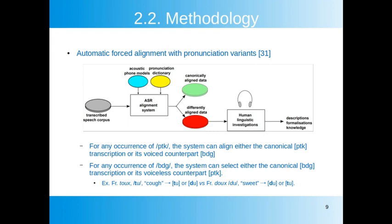All five speech recognition systems — one per language — are comparable in terms of architecture and were previously trained on similar data. Voicing or devoicing is decided based on whether the best matching phone model corresponds to the original voiceless or voiced canonical form, or to the voiced or devoiced variant — much like an automated ABX judgment task. The system compares the acoustic realization of each consonant with the corresponding voiceless or voiced phone model and selects the best one. For any occurrence of a voiceless stop, the system can align either the canonical voiceless transcription or its voiced counterpart, and conversely for any voiced stop.